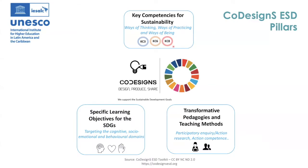The first pillar focuses on the key competencies for sustainability identified by UNESCO. They are all the relevant competencies needed to be able to act and face sustainability challenges. Among these competencies are system thinking, future thinking, critical thinking, and so on.